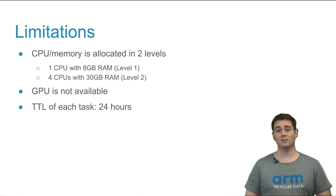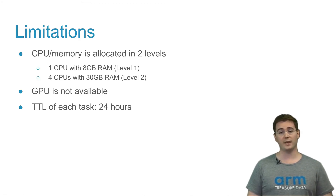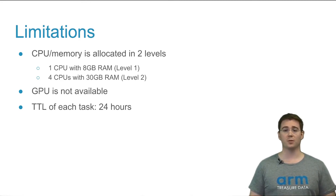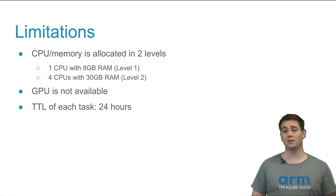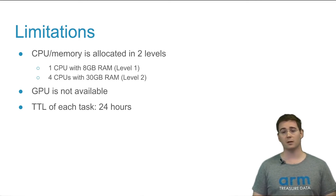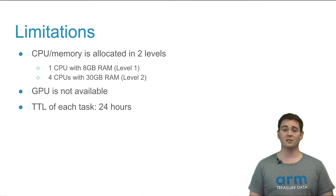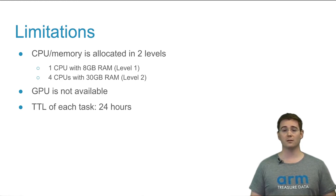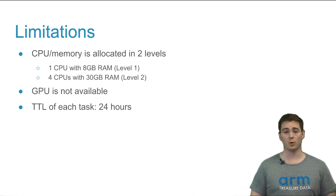Please note there are a few limitations on this new service, namely we only have two bucket levels: either one CPU with eight gigs of RAM, or four CPUs with 30 gigs of RAM. More than that we don't currently support, but we may in the future, so if it's a product feature you need, please reach out and let us know. Likewise, GPUs are not currently available for accelerated learning or inference, though this may be added in the future depending on customer demand. In addition, the standard TTL of 24 hours does apply to this just like any other workflow, so if your Python script runs for longer than that, it will be killed automatically by our safety system. Please make sure to batch them appropriately.